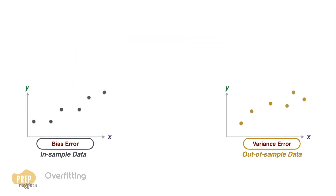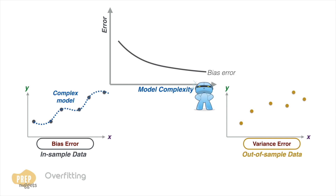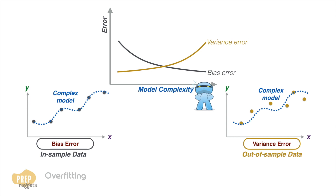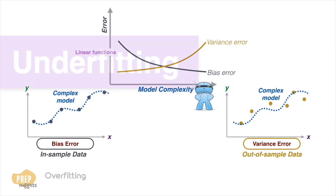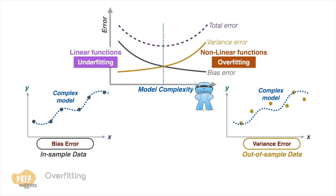Another way to study error rates is to make them a function of model complexity. As complexity increases in the trained model, bias error shrinks as the model gets better at explaining in-sample variations. However, variance errors increase as the increasingly complex models get poorer at explaining variations in out-of-sample data. Typically, linear functions are more susceptible to bias error and underfitting, while non-linear functions are more prone to variance error and overfitting. Finding the optimal complexity for the model is a core part of the machine learning process and the key to successful generalization.